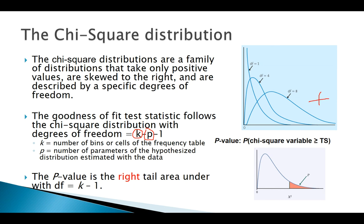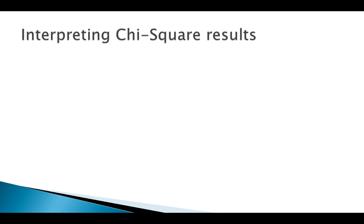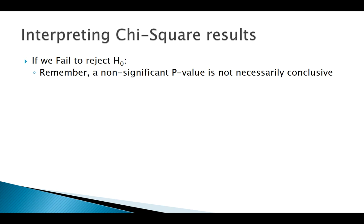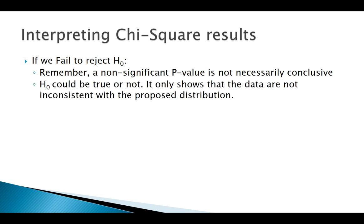Once we go through one of these tests, how do we interpret our results? Remember what our null is: our null is that it fits the hypothesized distribution. Even if we do fail to reject, we don't say we accept the null. If we fail to reject, we're saying yes, this distribution looks like a pretty good representation of the data, but it's not necessarily set in stone that this data has to come from that distribution. We're saying it's not inconsistent with that distribution.